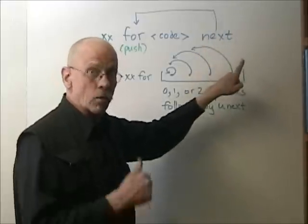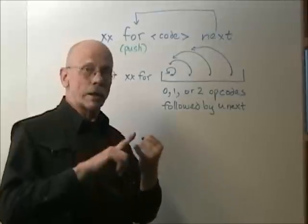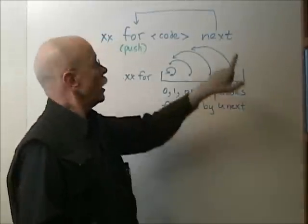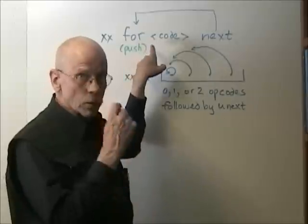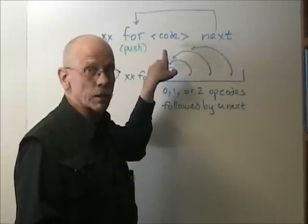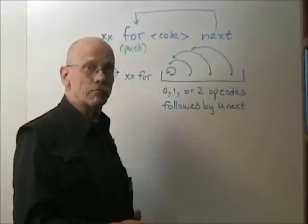If R is not 0 when NEXT executes, R is decremented by 1, and NEXT branches to its destination address, thus forming a 0 relative counted loop.